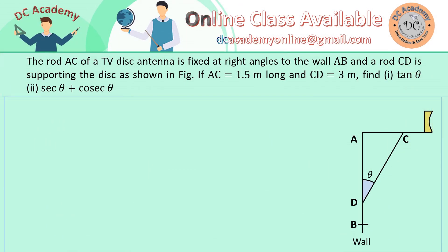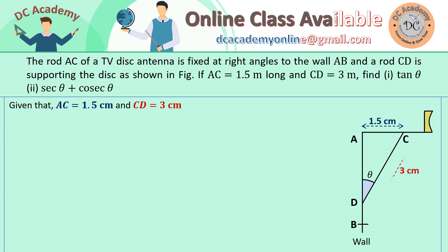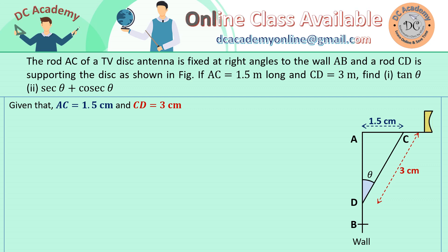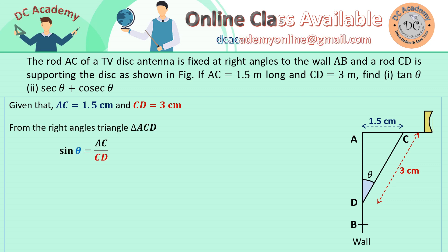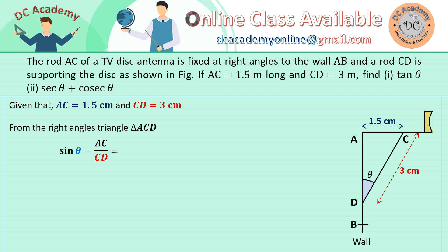In this particular problem, the figure is already provided. The lengths of a few sides of the right angle triangle ACD are provided to us. AC is 1.5 and CD is 3. For the right angle triangle ACD, corresponding to angle theta, the opposite side AC and hypotenuse CD are given. So we can say sine theta will be AC divided by the hypotenuse CD — that is 1.5 divided by 3.